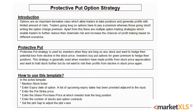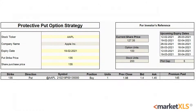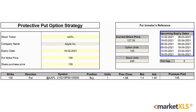MarketXLS offers a template for this strategy, and here is an introduction page. Here is the active template where the yellow cells have to be inputted by the user — the stock ticker, expiry date, the ATM strike price for the put, and the price at which you have already gone long on the underlying. Some upcoming expiry dates are available for reference. For this video we will be using Apple with an expiry date of 19 February, an ATM strike price of $135, and we have assumed that we have already gone long on the underlying at $135.